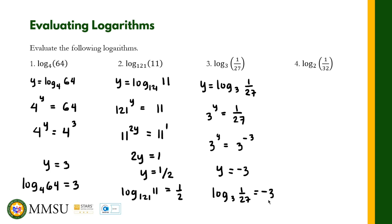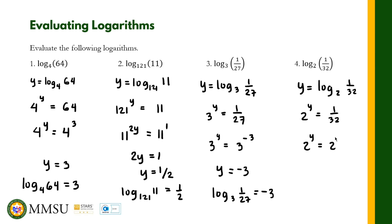For the last example, we have y equal to the logarithm with base 2 of 1 over 32. So we have 2 raised to y equals 1 over 32. Since 32 can be written as 2 raised to 5, this becomes 1 over 2 raised to 5, or 2 raised to negative 5. So 2 raised to y equals 2 raised to negative 5, therefore y equals negative 5. The logarithm with base 2 of 1 over 32 is equal to negative 5.